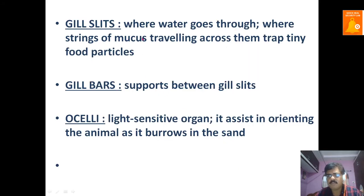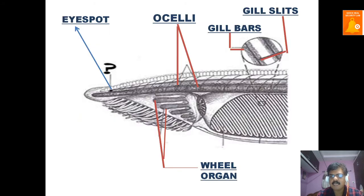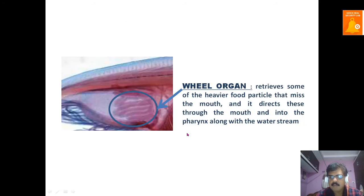Within the gill slits, strings of mucus trap tiny food particles, so food particles are transferred toward the digestive system and do not escape through the atriopore. The gill bars are supportive structures present between the gill slits. The ocelli are light-sensitive organs present throughout the length of the body; they assist in orienting the animal as it burrows in sand. The wheel organ receives heavier food particles and directs them through the mouth into the pharynx along with water streams.